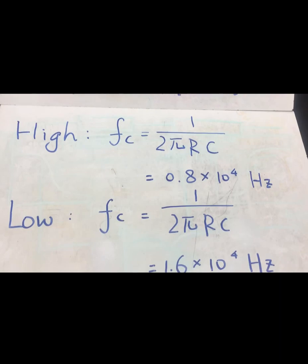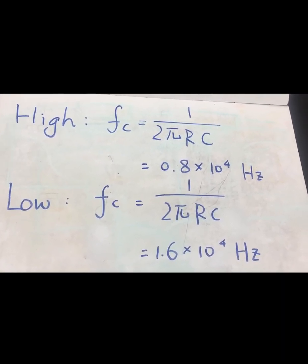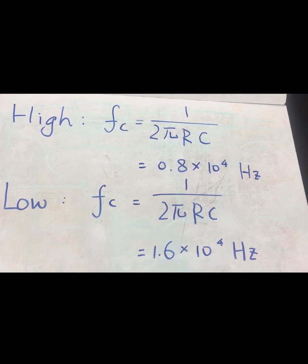We calculate the low pass filter cutoff frequency to be 1.6 times 10 to the 4th and the high pass one to be 8 times 10 to the 3rd.